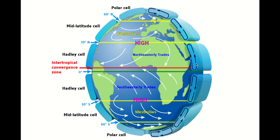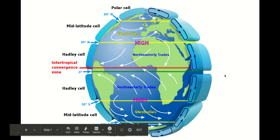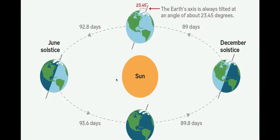So the Hadley cell shifts north, the Ferrel cell shifts north, the polar cell shrinks. This is because these are operating in the atmosphere and the atmosphere is not fixed. The Hadley cell, which starts where the Sun's energy is most concentrated, migrates north in the summer. In the winter, the opposite is true — the southern hemisphere is tilted towards the Sun, meaning it receives more solar energy, and the Hadley cell and the pressure cells migrate south.